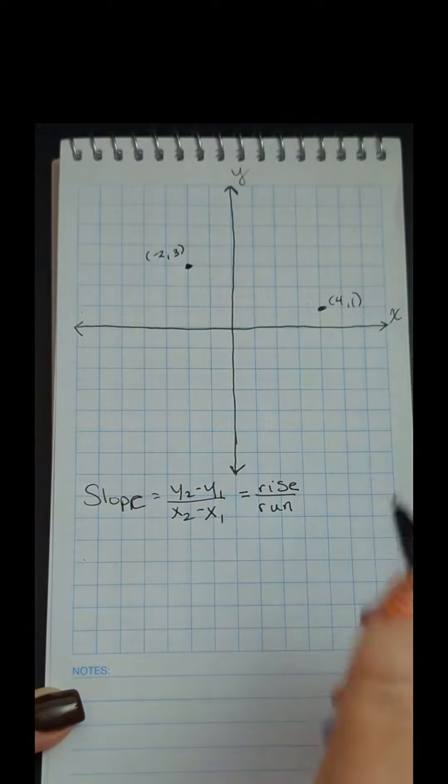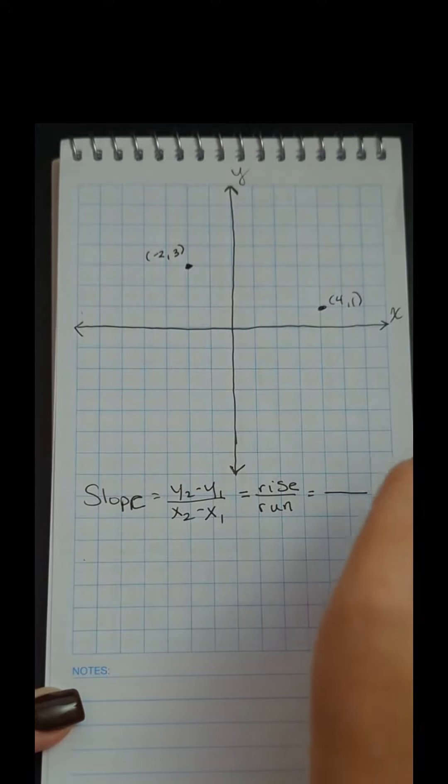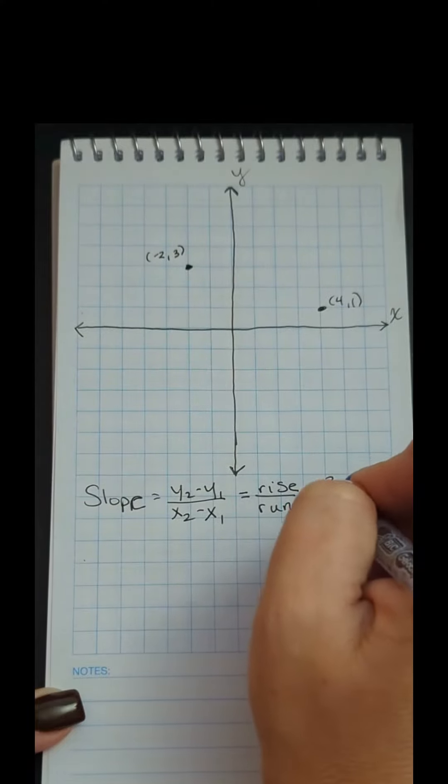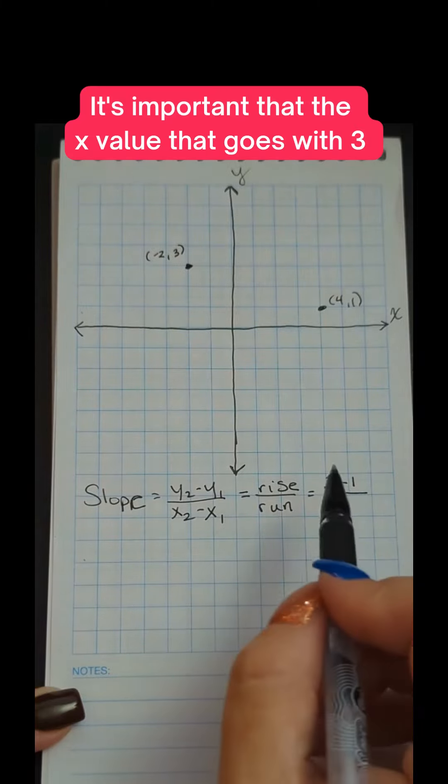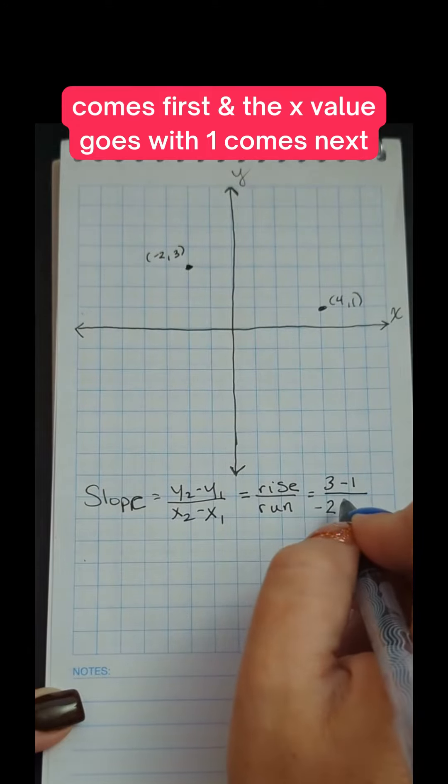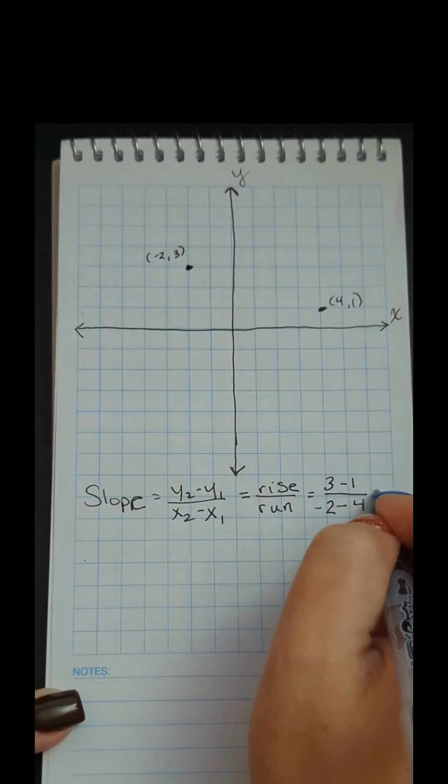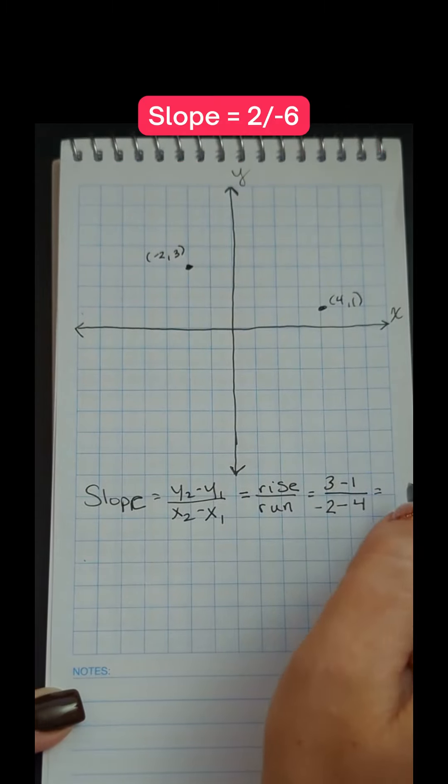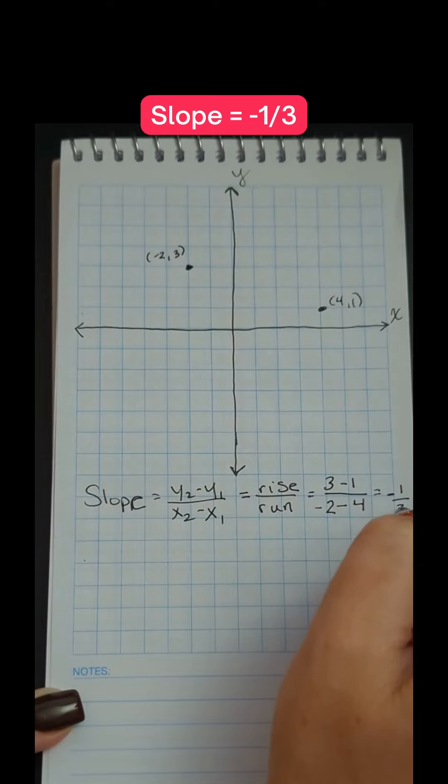If I want to find the slope between those two points, I'm going to set up a fraction. I'm going to subtract the y values. Let's do 3 minus 1, and I'm also going to subtract the x values on the bottom. What's important is that the x value that goes with 3 comes first, and the x value that goes with 1 comes next. So my slope is going to equal 2 over negative 6, or negative 1/3.